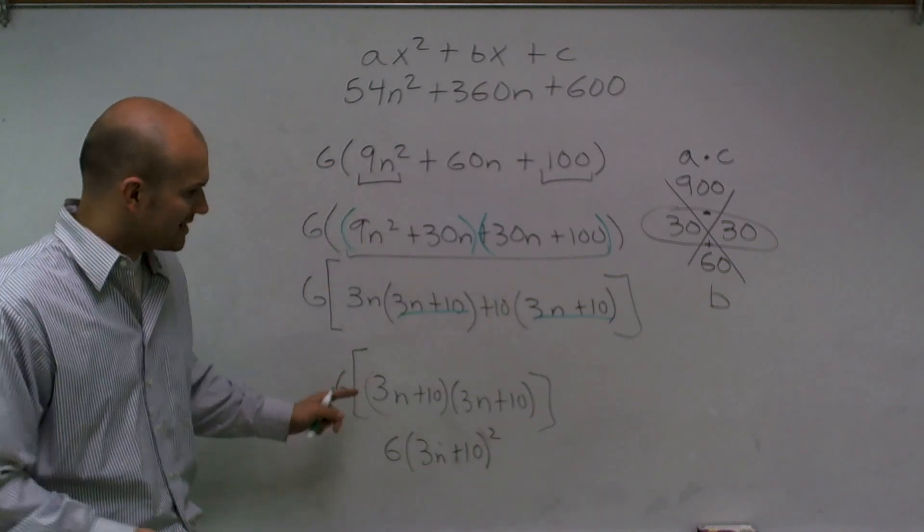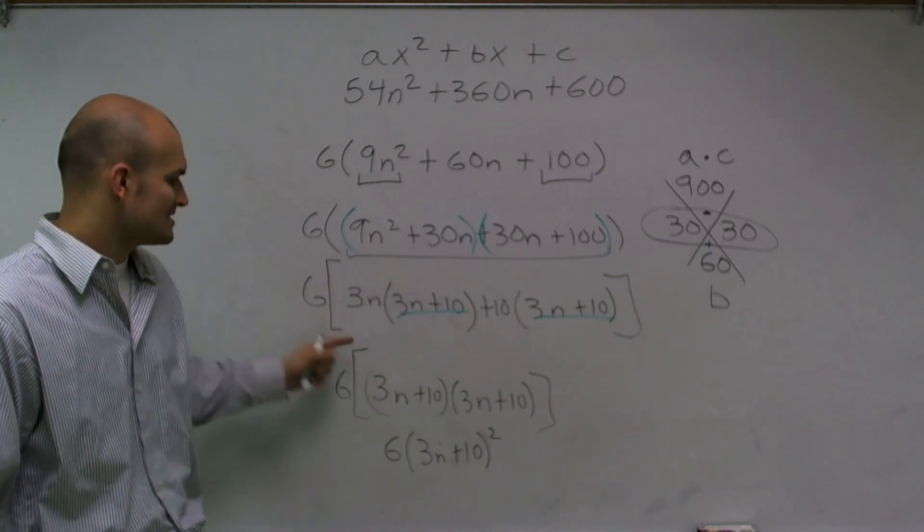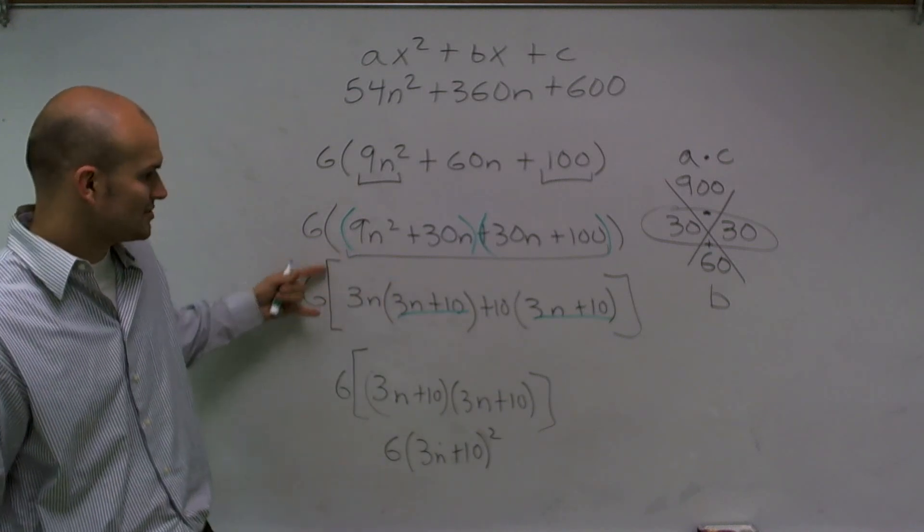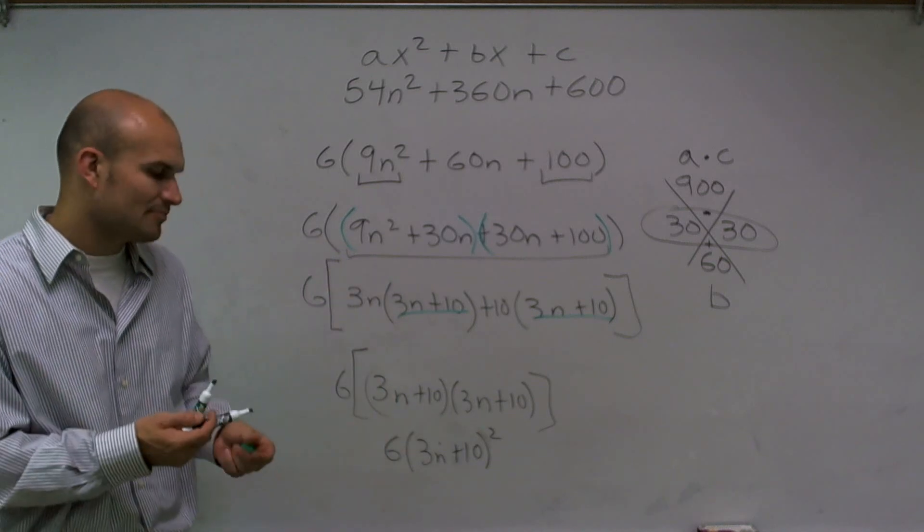And again, I just used the brackets just so I wouldn't get you guys too confused by leaving it there. I factored out my 6 and I just want to use brackets so you guys weren't seeing so many parentheses. But your final answer would be 6 times 3n plus 10 squared. And that's it.